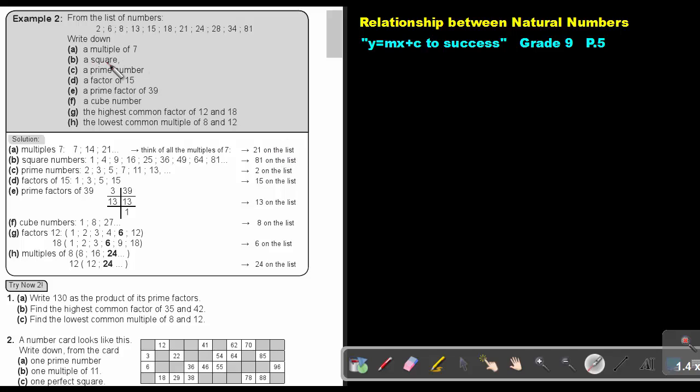Number B: a square. What are square numbers? 1, 4, 9, 16, 25, 36, 49, 64, 81. Which one is on the list? 81. So that's the square number.